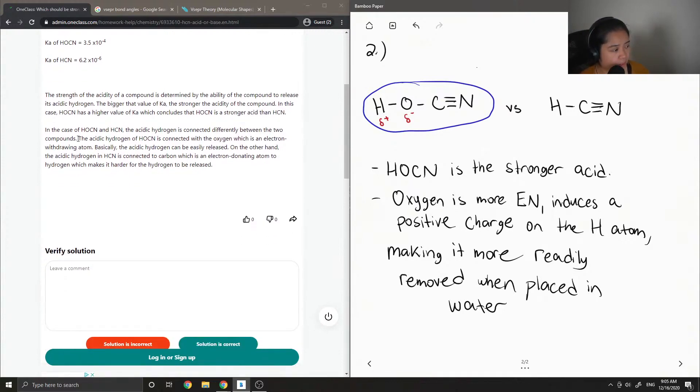In the case of both, the acidic hydrogen is connected differently between the two compounds. The acidic hydrogen of HOCN is connected with the oxygen, which is an electron withdrawing atom. Basically, the acidic hydrogen can be easily released.